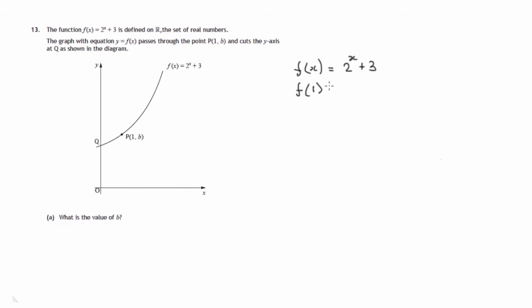At the particular value x is 1, the formula gives us 2 to the power 1 plus 3. That's just 2 plus 3. That's 5. In other words, b is equal to 5.